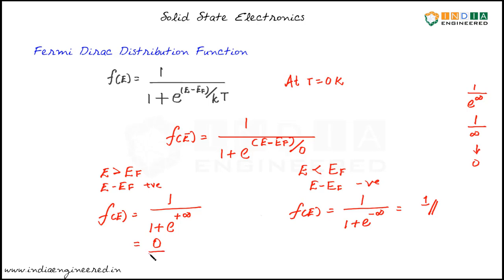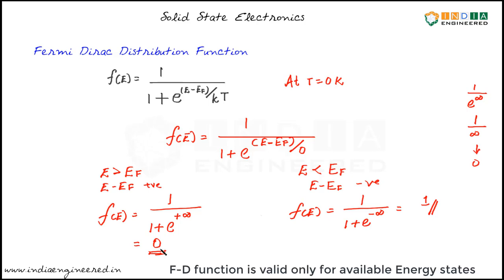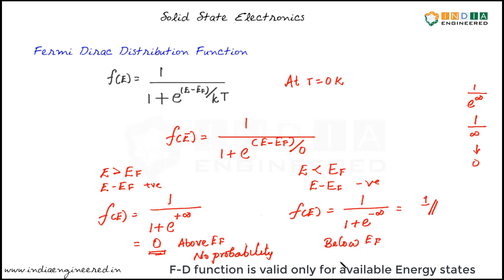So for E greater than Ef, we have found that at 0 Kelvin the probability of finding an electron is 0 — meaning above Ef there is no possibility of finding an electron. For energy levels less than Ef, the probability is 1, meaning we can definitely say there is an electron occupying that energy level. Below Ef, we have 100% probability of finding an electron. In summary, at 0 Kelvin, for energy levels above the Fermi level there is no probability of finding an electron, and for those below the Fermi level there is 100% probability.